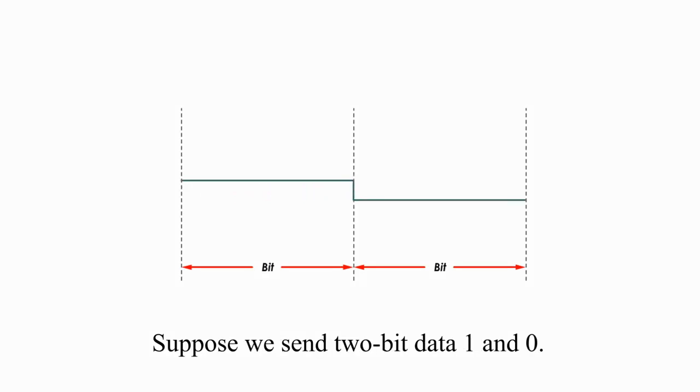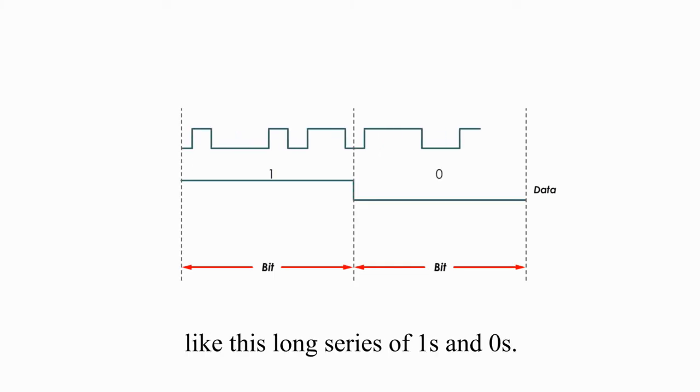Suppose we send two bit data, one and zero. In order to encode our original signals, we want to add some noises, which are PN sequence or chips, like this long series ones and zeros.